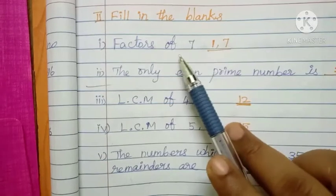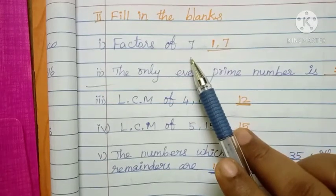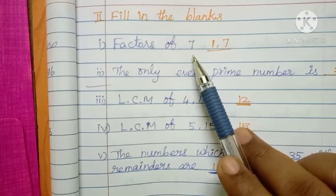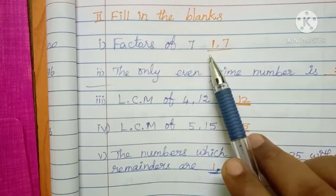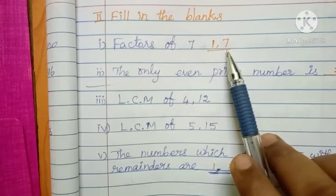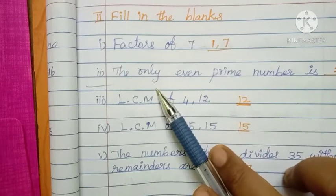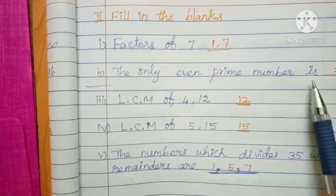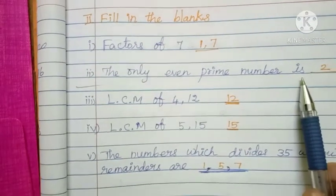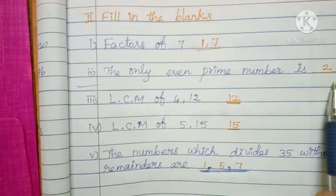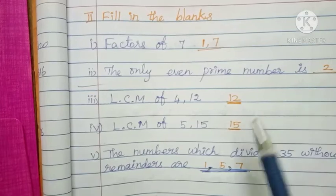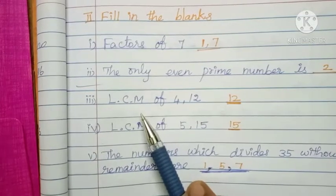Fill in the blanks. Factors of 7: 7 is coming for 1 table and 7 table. The only even prime number is 2.